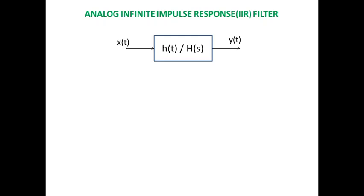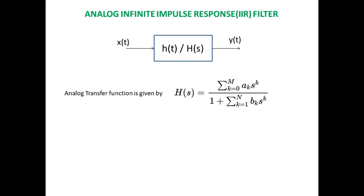For example, you give just one sample of input to that particular system and further on, even if you do not apply input, the filter will be continuously producing output. This is because feedback is always present in an IIR filter. When you apply Laplace transform to this differential equation, we determine the analog transfer function, which is given by H(s) = summation k=0 to m of a_k * s^k, divided by 1 plus summation k=1 of b_k * s^k. The denominator factor very clearly states that feedback is always present in an IIR filter.